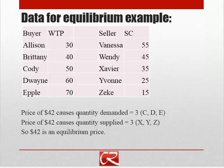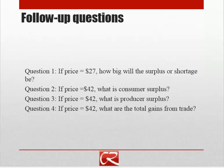A price of $42 is actually going to give us our equilibrium here. That's going to make buyers Cody, Duane, and Apple willing to buy, and we're going to have three suppliers as well. So $42 is our equilibrium price. I want you to consider the following questions — you may want to stop the video and try to work them through on your own, and then in the next slide I'm going to go through the answers.